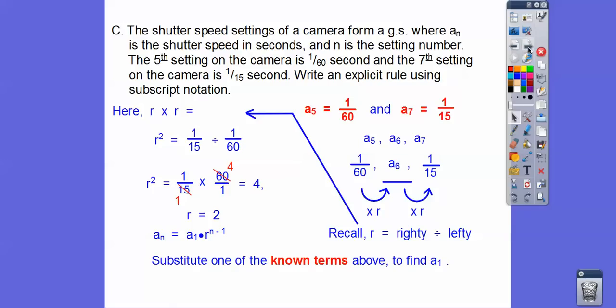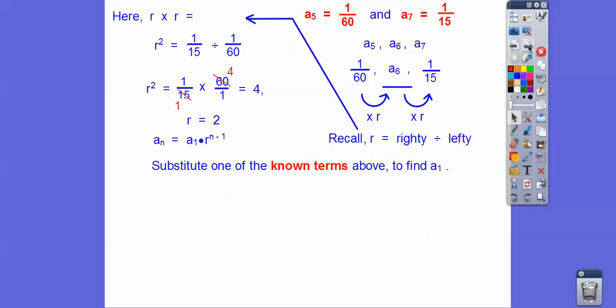Or you can do what the book does here, and this is what I would suggest also, is substitute in either a sub 5 or a sub 7 into this formula right here, and that'll get us a sub 1 right there. Because we know what r is right there. And so if we plugged in a sub 5, this would be 5 minus 1. If we plugged in a sub 7, this would be 7 minus 1, because this is n right here. This represents n, whether it's 5 or 7.